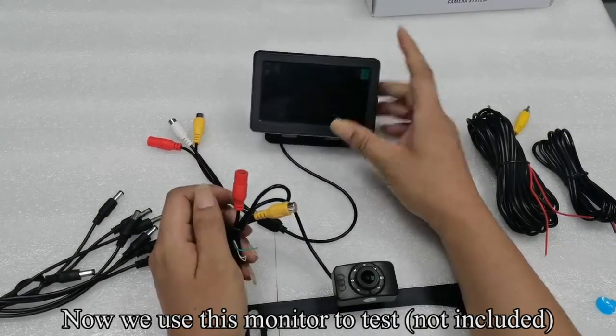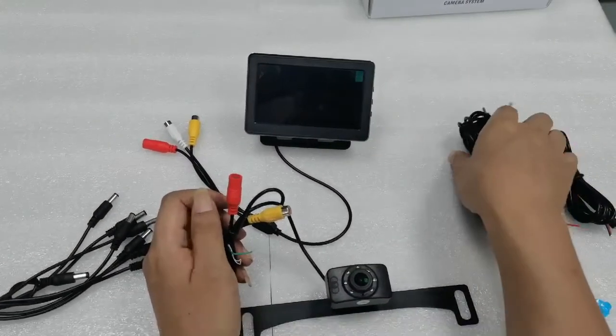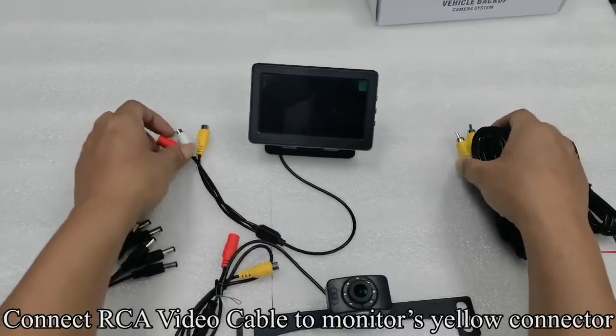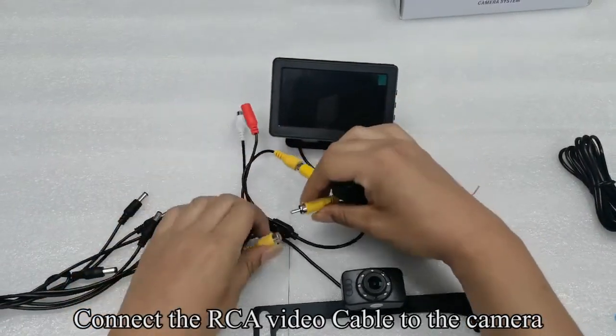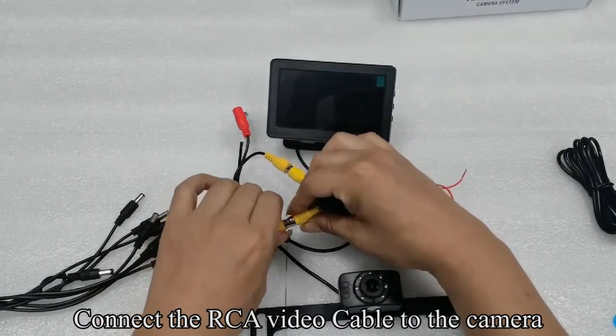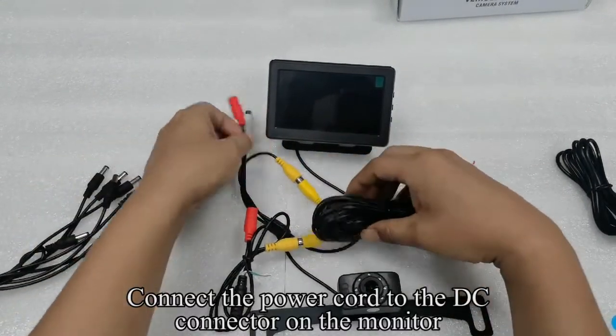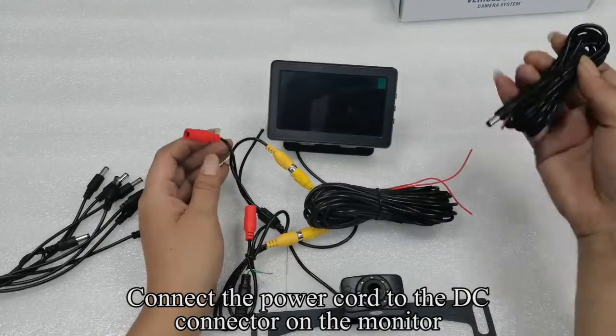Now we use this monitor to test, not included. Connect the RCA video cable to the monitor's yellow connector. Connect the RCA video cable to the camera. Connect the power cord to the DC connector on the monitor.